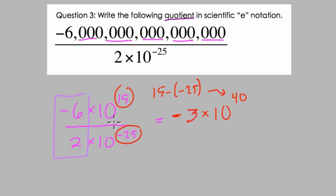And here we're subtracting the exponents because we're dividing. But because we're subtracting a negative exponent, we end up adding, to get our answer here, negative three to the fortieth power.